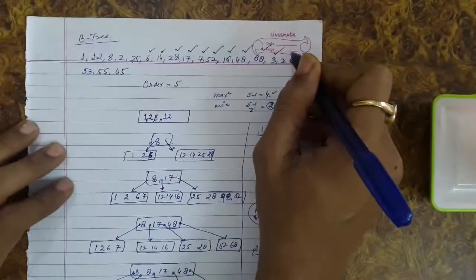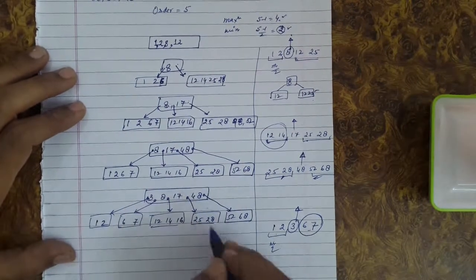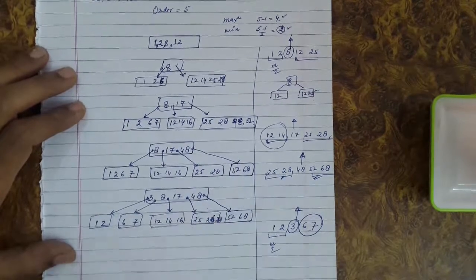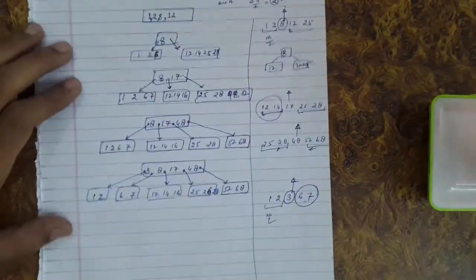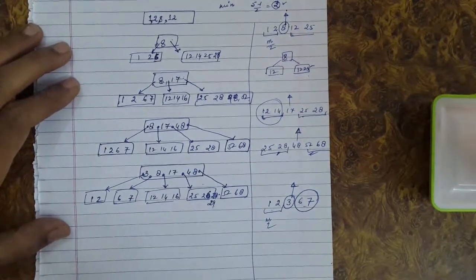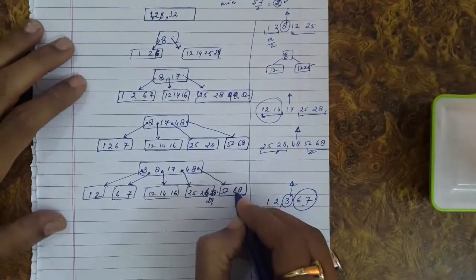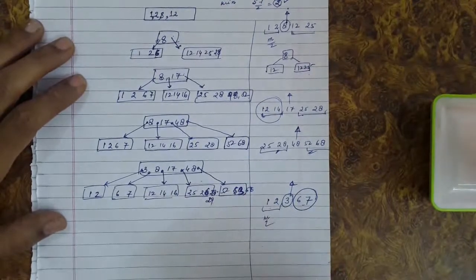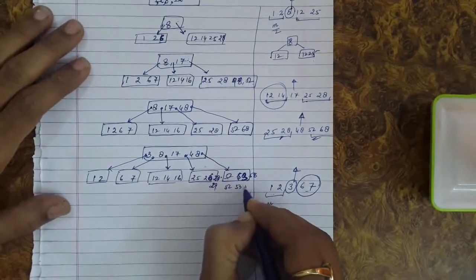The next insertion is key 26, which follows the path to the node containing 25 and 28, giving 25, 26, and 28. Key 29 is also inserted into this node, giving 25, 26, 28, and 29 — no violation yet. Key 53 is inserted next into the node with 52, followed by key 55, giving 52, 53, 55, and 58.